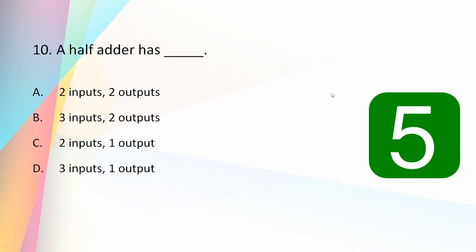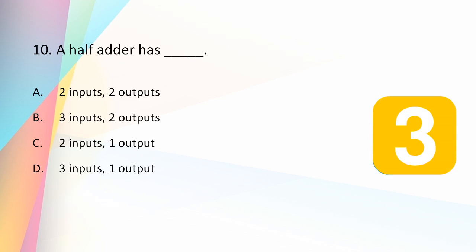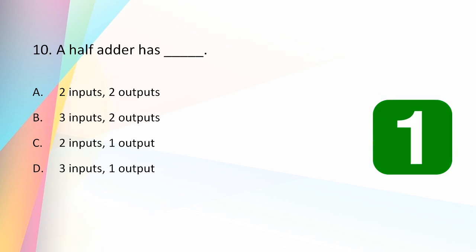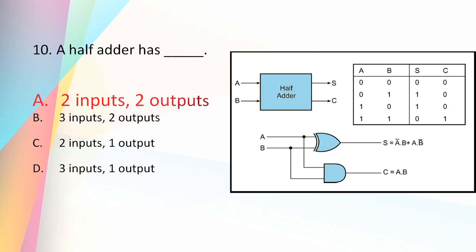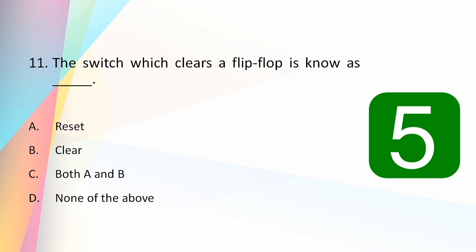A half adder has: two inputs and two outputs, three inputs and two outputs, two inputs and one output, or three inputs and one output? The answer is two inputs and two outputs. A half adder adds two inputs without any carry from the previous stage, producing a sum output and a carry output. Half adders are used to add the LSB (least significant bit) where there is no carry-in.